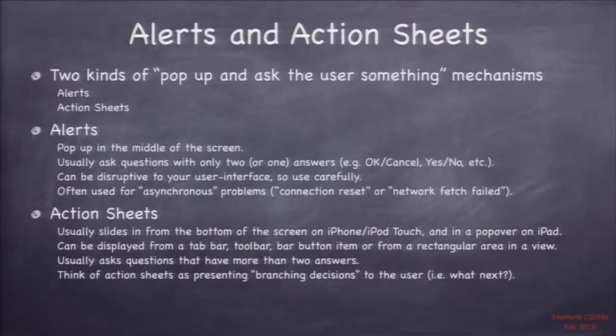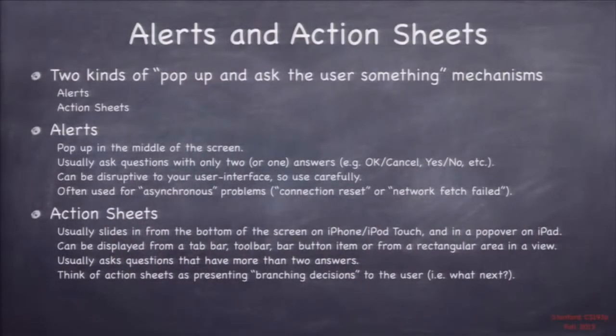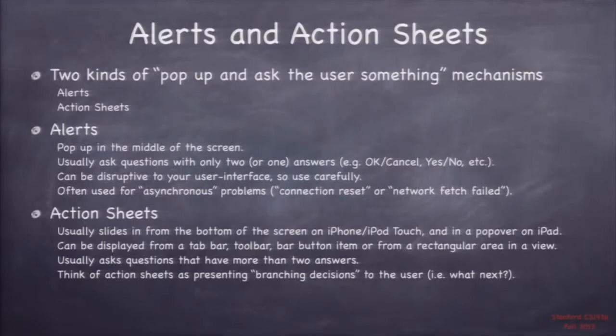Look at the contacts app — even when adding a contact in a modal view controller, when it comes to adding text like URLs or emails, you just click right there and type them in; it doesn't go modal again just for that information. Action sheets slide up from the bottom on the iPhone and usually appear in a popover on the iPad. They're for branching decisions — when the user needs to tell you something so you can decide which way to go. They're modal and stop everything until answered, so make sure that's really the UI you want versus just having buttons that push different view controllers.